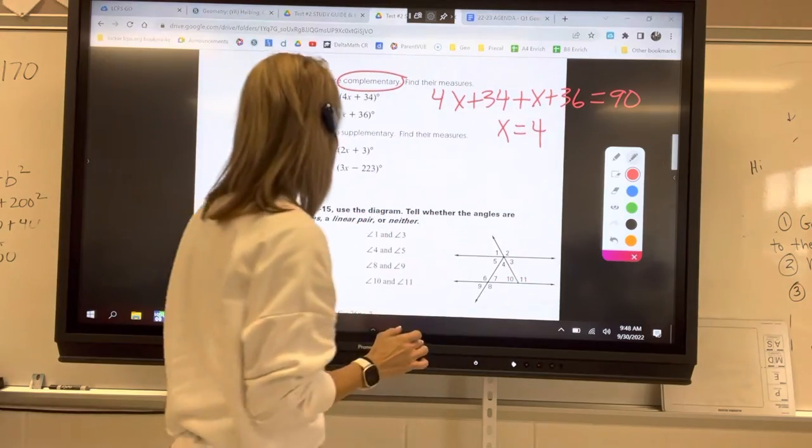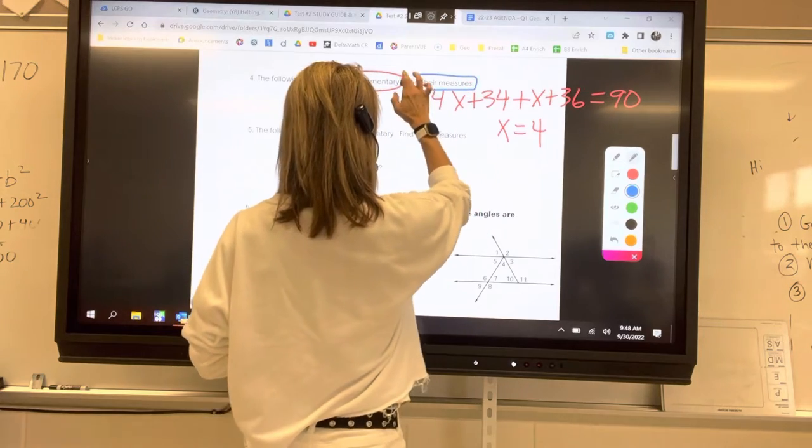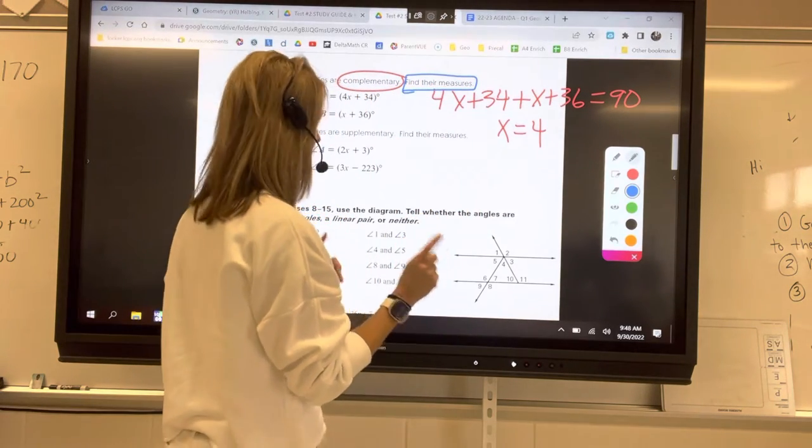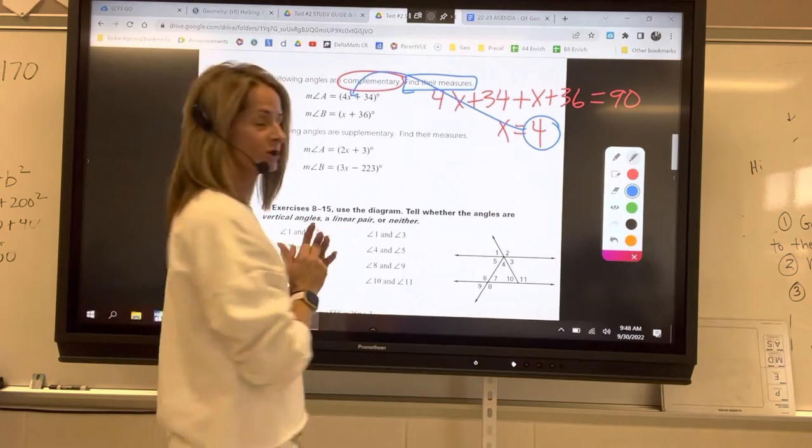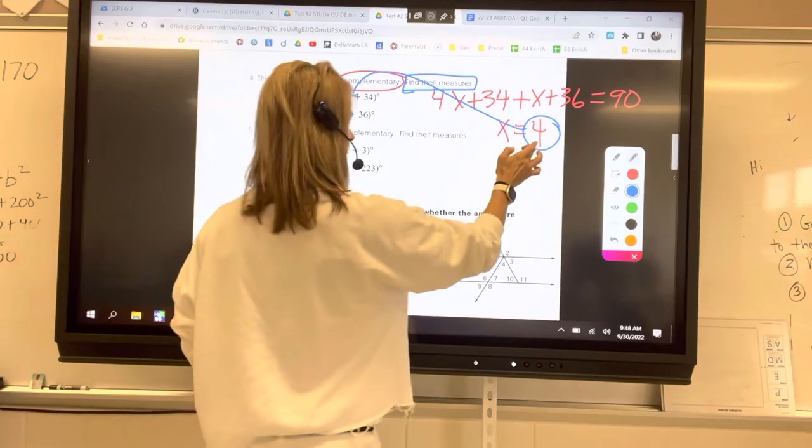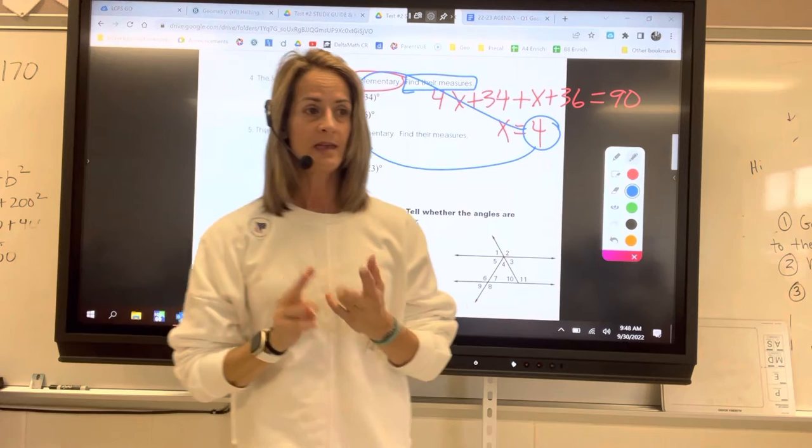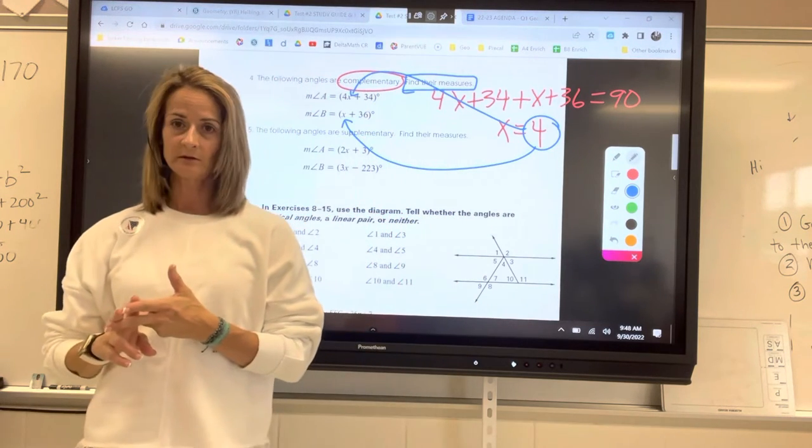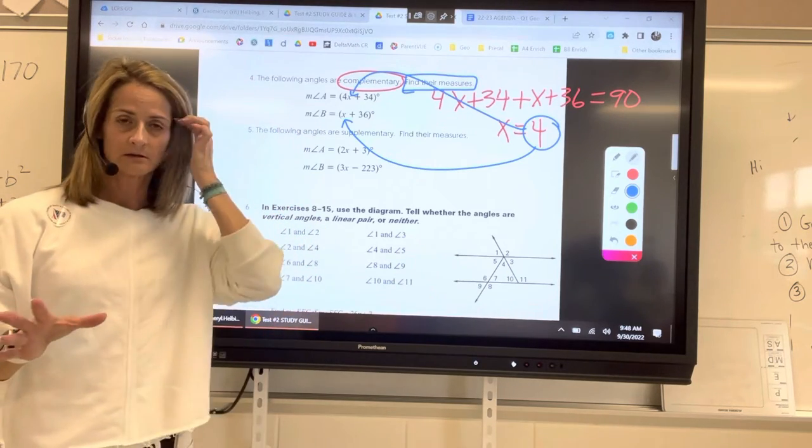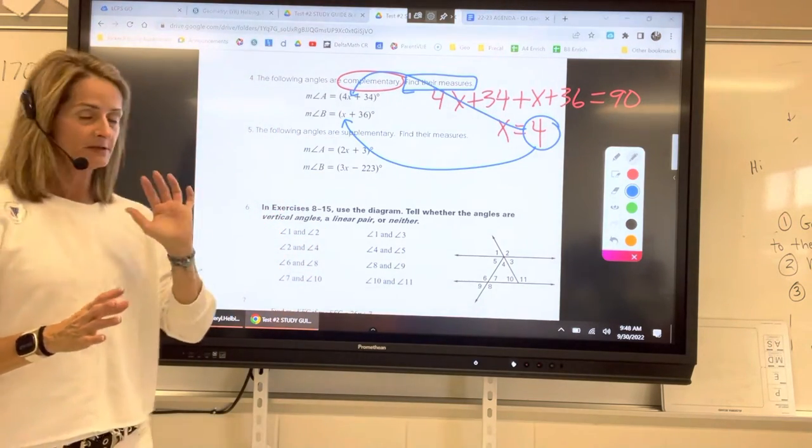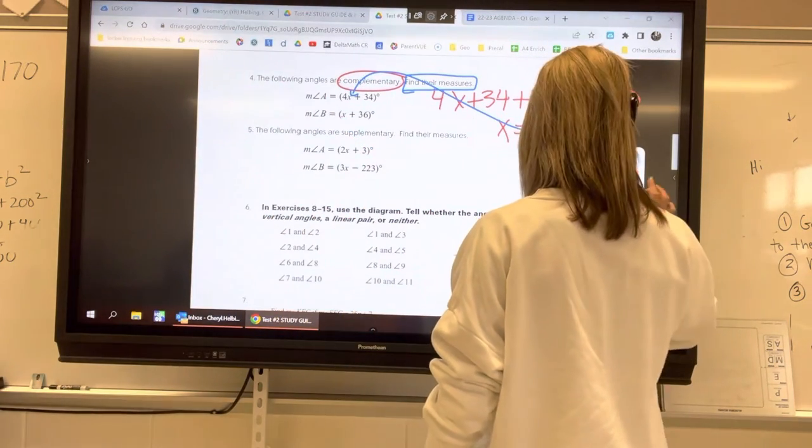Now, are we finished? Unfortunately, we're not. It's asking us to find their measures. So we're going to have to take that 4 and plug it in for x to find the measure of angle A, and then plug the 4 in here for x to find the measure of angle B. And the two numbers we get should add up to 90. How are we doing? Okay, this is okay. You're going to have a problem just like it on your test.